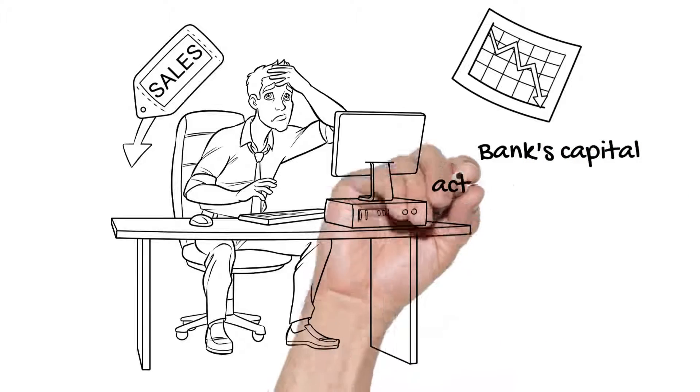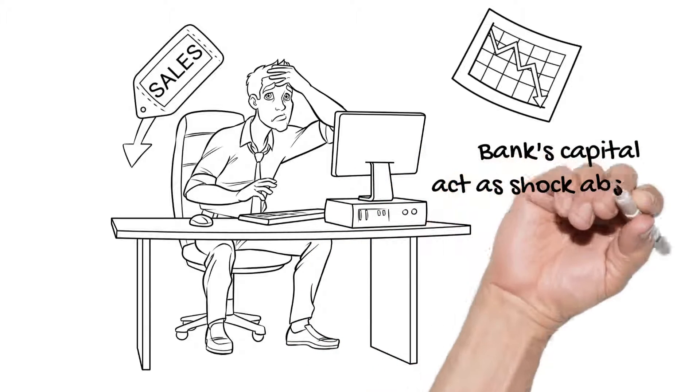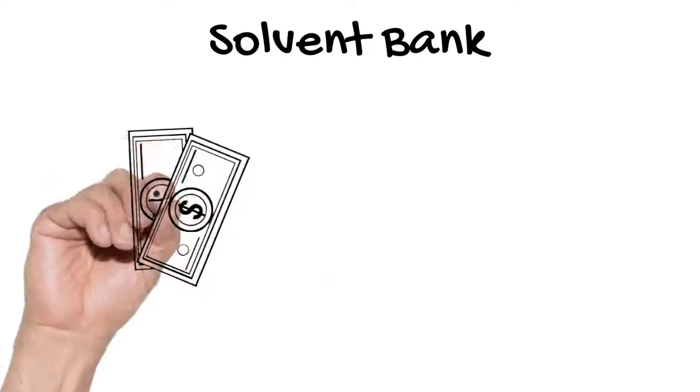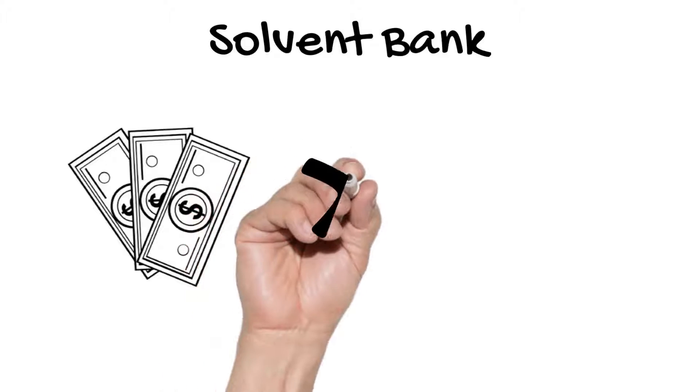A bank's capital acts as a shock absorber to pay for unexpected losses it makes on risky loans. A solvent bank has more than enough capital to pay for unexpected losses, meaning the bank's capital is larger than losses on risky loans.